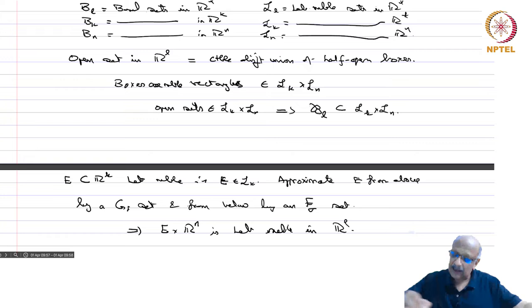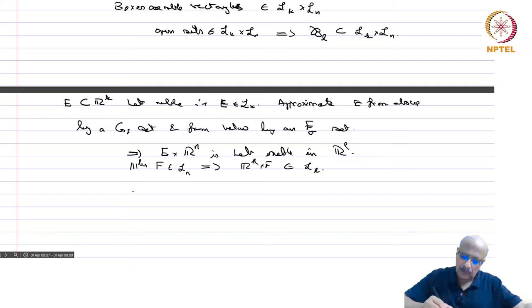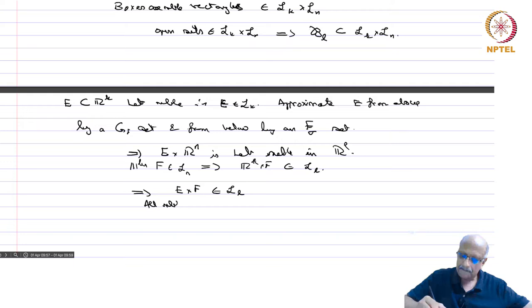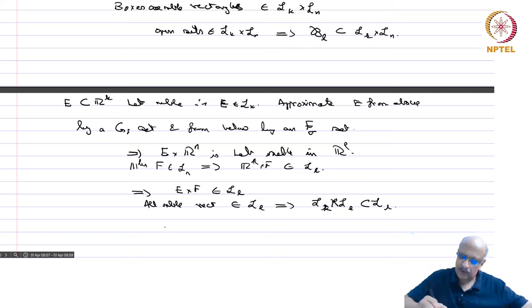Similarly, F in L^n implies R^k cross F belongs to L^L. So the intersection E cross F belongs to L^L. This means that all measurable rectangles belong to L^L, and this implies that L^k cross L^n is contained in L^L. Therefore we have B^L is contained in L^k cross L^n, which is contained in L^L.